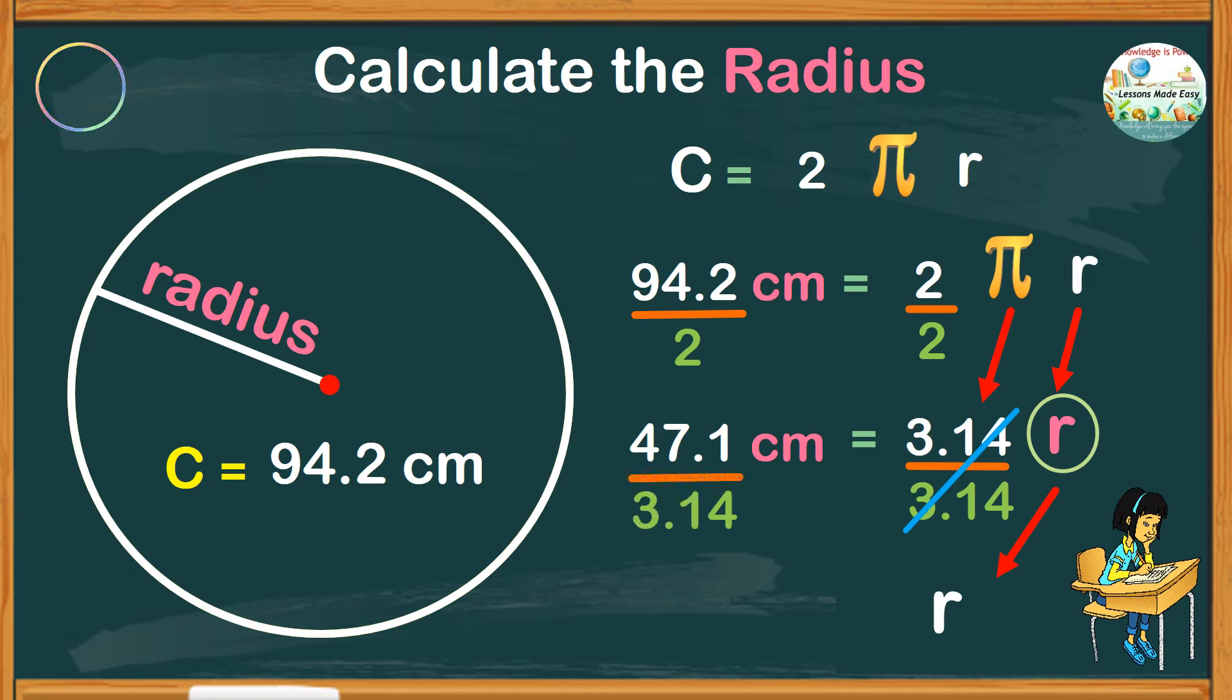Same with the circumference, divide by 3.14, and whatever the quotient is, is our radius.